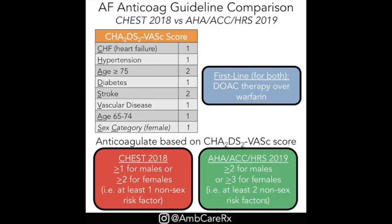Long-term management: rate control is usually preferred over rhythm control. Options include direct synchronized cardioversion, pharmacologic cardioversion, radiofrequency catheter ablation, or surgical maze procedure. For cardioversion: most successful within seven days of AFib onset. Echo is needed prior to cardioversion to ensure no clots. AFib greater than 48 hours undergoing elective cardioversion requires anticoagulation for at least three weeks before cardioversion, or a TEE-guided approach. If under 48 hours, no need to wait — anticoagulation can start right away. Anticoagulation must continue for four weeks after cardioversion.